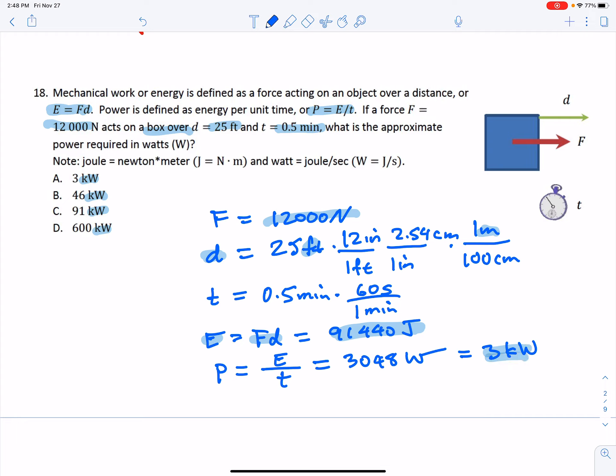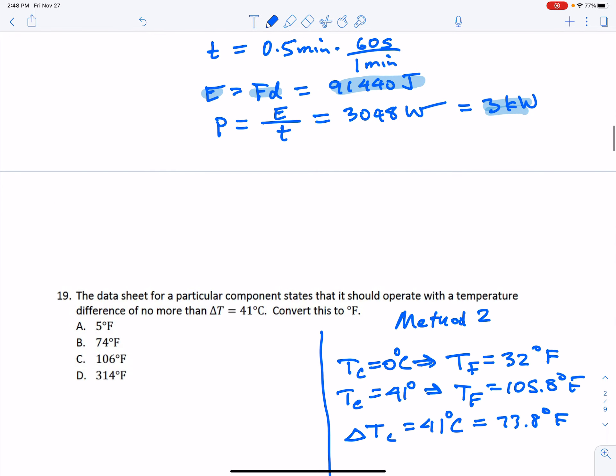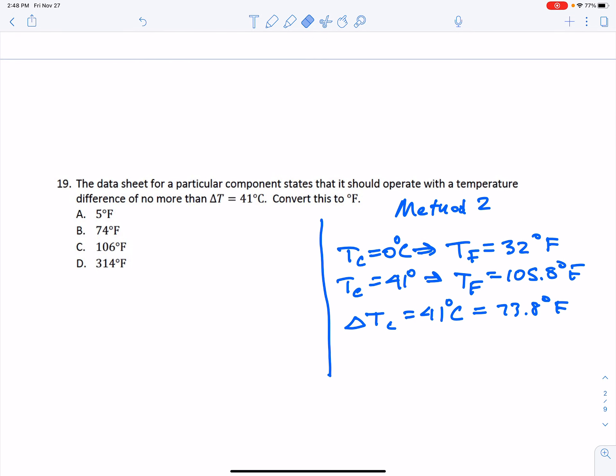Okay, problem 19, the key here is to notice that the temperature is actually a temperature difference. If you're looking at a temperature difference, then really the 32 part doesn't matter anymore. Remember there's a video where I talked about temperature conversions and how we use different scales and that there's an offset on the Fahrenheit scale.